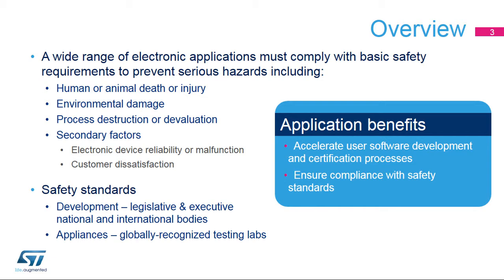The primary goal is to prevent human death or injury as well as environmental damage, but there are many other important factors at a lower level, such as the devaluation of an industrial process, including the loss of important data, connections, power, or control, and many others.